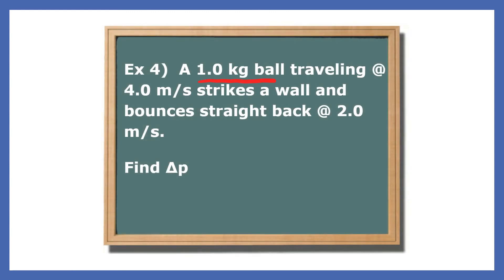A one kilogram ball traveling at four meters per second strikes a wall and bounces straight back at two meters per second. Find the change in momentum. This one's a lot different, simply because the ball bounces back in the opposite direction. So while the initial velocity is four meters per second, we have to be careful about that second velocity that's headed in the opposite direction.